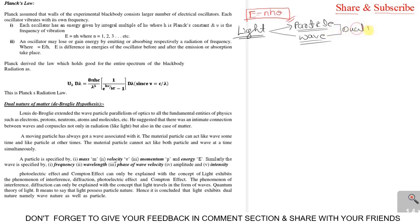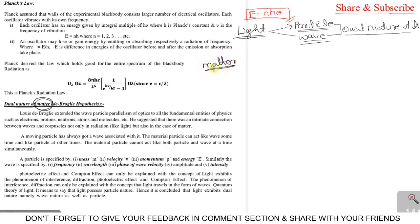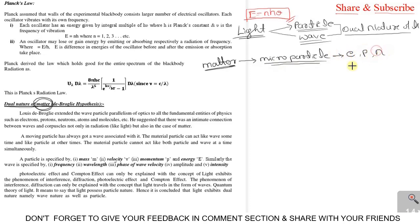Ultimately, we said light may behave as both, that's why we call it the dual nature of light. Similarly, here we are saying dual nature of matter. Whenever we say matter, we are talking about micro-level particles — nothing but electrons, protons, and neutrons. These are the matters.